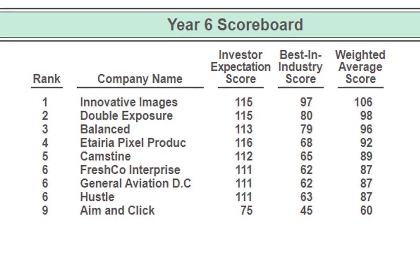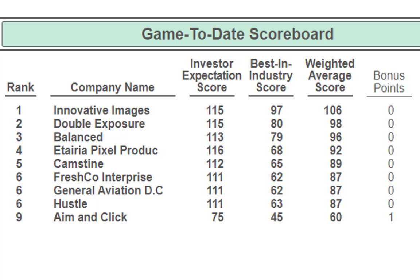If we scroll down and look at the game-to-date scoreboard, it's going to be the exact same because we've only done year six so far — except team A did receive a bonus point, so now they're at 61. So everyone so far, keep it up.